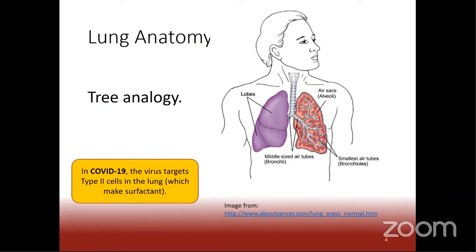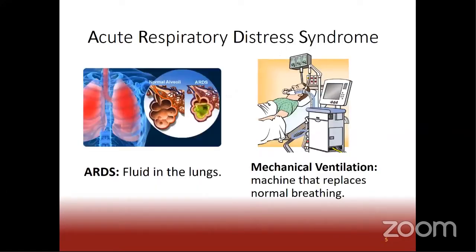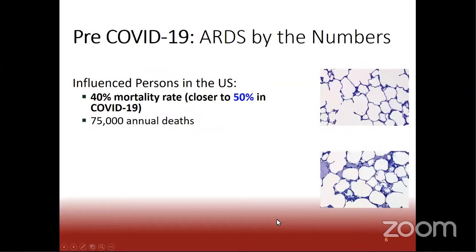In COVID-19, the virus actually targets a cell within the alveoli called a type 2 cell. These are the cells that make surfactant in the lung. Surfactant plays a very important role in reducing surface tension forces so that when you breathe, your lung can readily open. When talking about ARDS, this is characterized by sufficient fluid or edema in your lungs such that you can no longer breathe to keep yourself alive, and you must be mechanically ventilated.